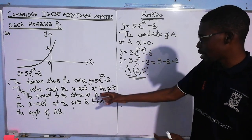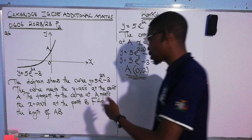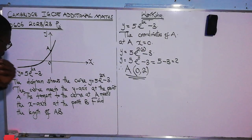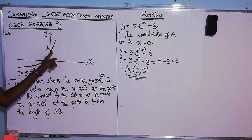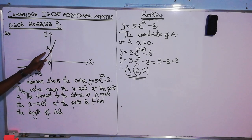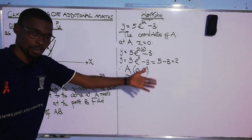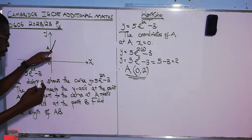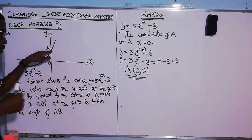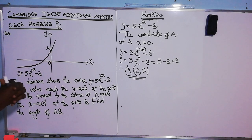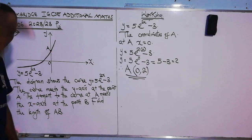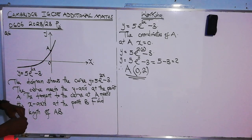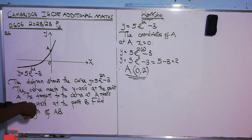With the pair of coordinates of B and coordinates of A, we will be able to get the length of AB. To obtain the equation of the tangent at A, whose coordinates are (0, 2), we need the gradient at that point. The gradient of the curve at A equals the gradient of the tangent, since A is the point of tangency. So let us find the gradient of the curve at A.